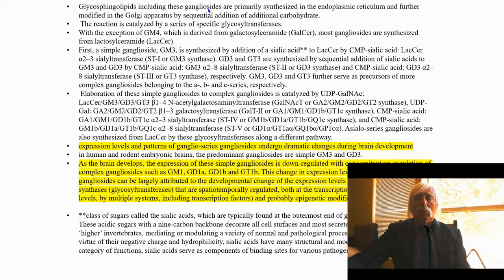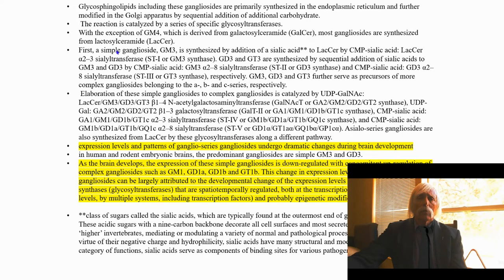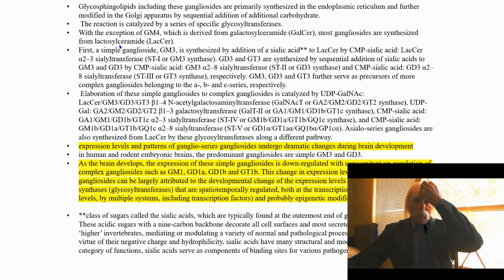Glycosphingolipids, including gangliosides — carbohydrate-modified sphingolipids — are primarily synthesized in the endoplasmic reticulum and further modified in the Golgi, with a sequential addition of carbohydrate. These are glycolipids, glycosphingolipids, and the reactions are characterized by specific glycosyltransferases functional in the ER and Golgi. With the exception of GM4, which is derived directly from galactosylceramide, most gangliosides are synthesized from lactosylceramide — meaning there's a lactose involved as the first covalent modification of a sphingolipid, containing the disaccharide glucose-galactose.